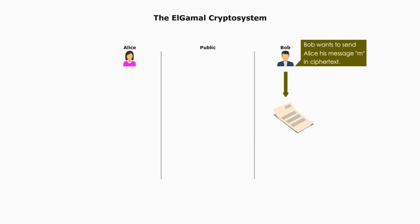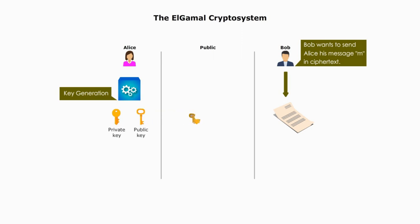The process of the Elgamal algorithm consists of three major steps. Step 1: Key generation by Alice, the message receiver. Alice will generate a pair of keys — a public key and a private key. She sends the public key to Bob and keeps the private key. These two keys are mathematically related.